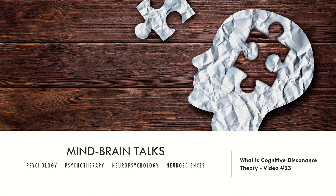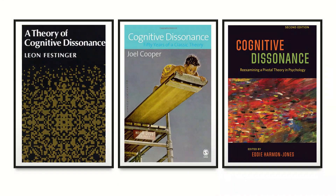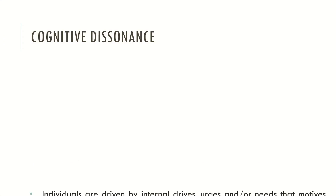Now let's look at the manuals that I recommend to you today. The first is A Theory of Cognitive Dissonance from Leon Festinger, which is the first author to propose this theory. The second book is The Cognitive Dissonance: 50 Years of a Classic Theory from Joel Cooper. And the third is Cognitive Dissonance: Re-examining a Pivotal Theory in Psychology. Now let's see what cognitive dissonance is.